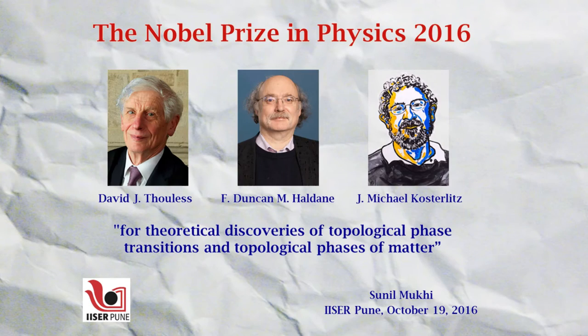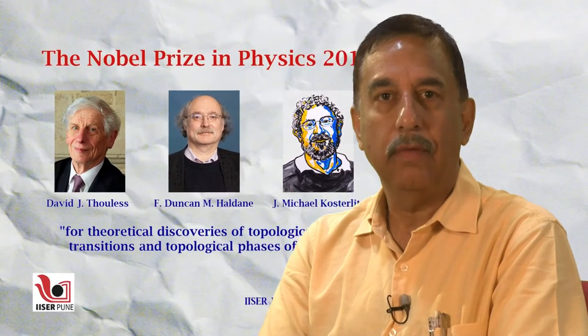The Nobel Prize in Physics for 2016 was given to three theoretical physicists: David Thouless, Duncan Haldane, and Michael Kosterlitz.